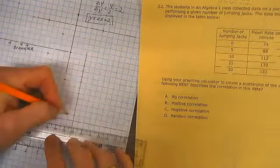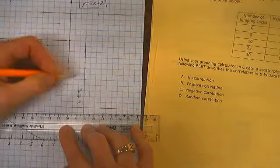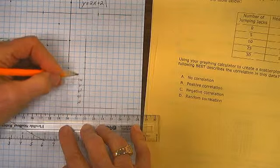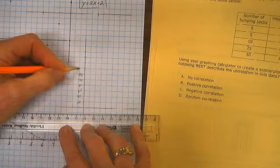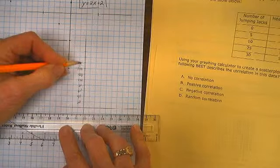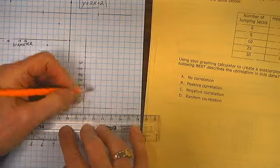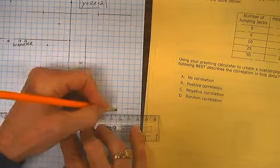Let's do 20, 40, 60, 80, 100, 120, 140, 160. Number of jumping jacks: 5, 10, 15, 20, 25, 30.